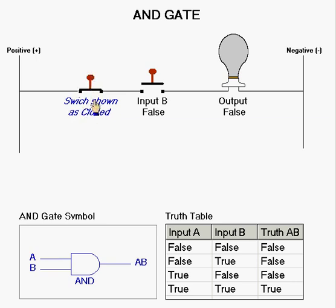But now, if you observe switch A, it is now closed. In this state, the current will flow through the switch.